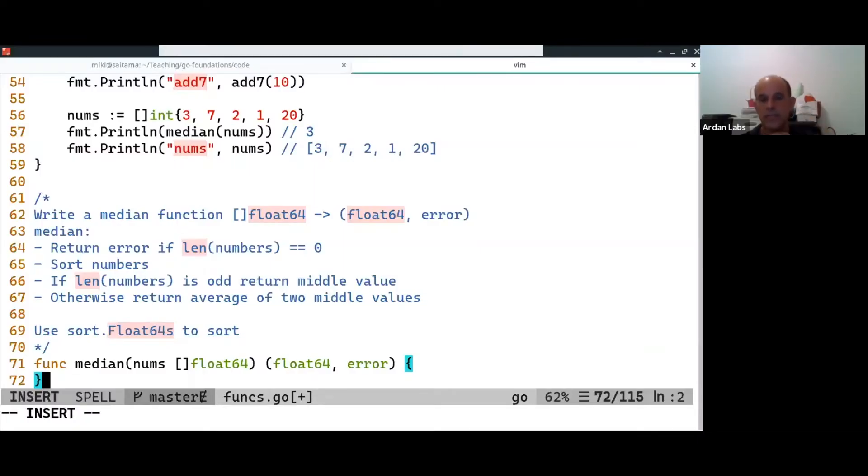So this is the function signature. It gets a slice of float 64 and returns a float 64.